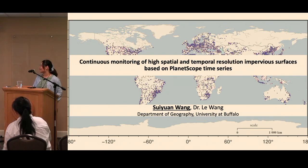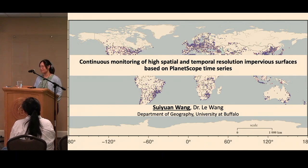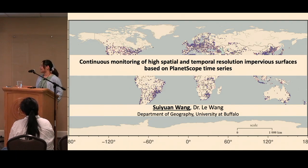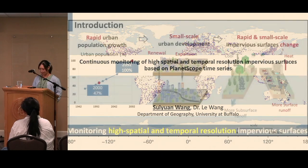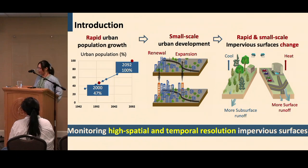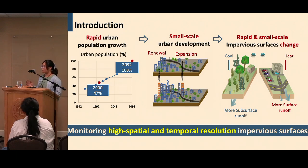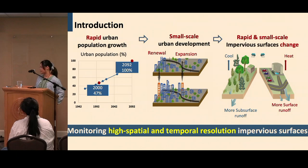Hello everyone, my name is Su-Yuan Wang and I'm a PhD student at University at Buffalo. Today I'm delighted to present my research on continuous monitoring of high spatial and high temporal resolution impervious surface. Recently, rapid urbanization has led to a lot of urban development — both urban renewal and expansion — happening at small scales and rapidly, making monitoring of impervious surface changes very important.